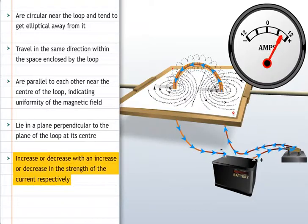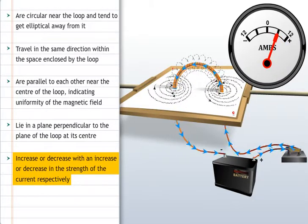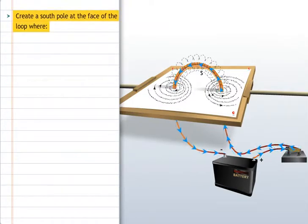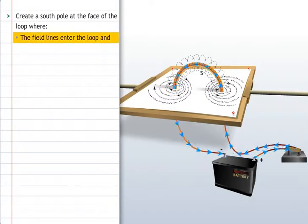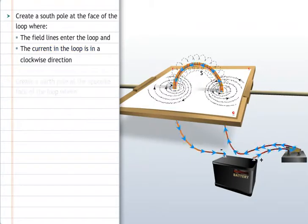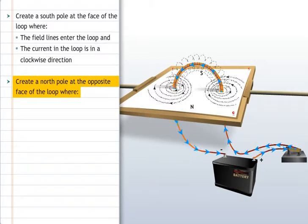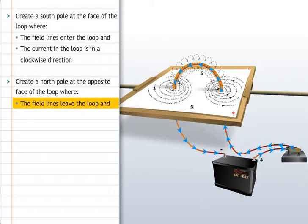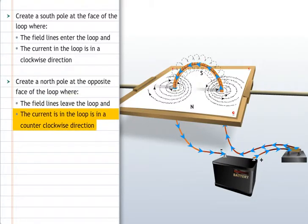They increase or decrease with an increase or decrease in the strength of the current respectively. These lines create a south pole at the face of the loop where the field lines enter the loop and the current in the loop is in a clockwise direction. They create a north pole at the opposite face of the loop where the field lines leave the loop and the current in the loop is in a counterclockwise direction.